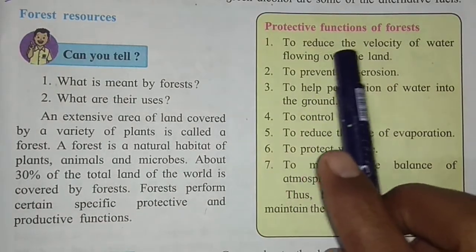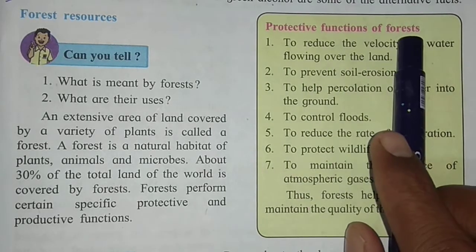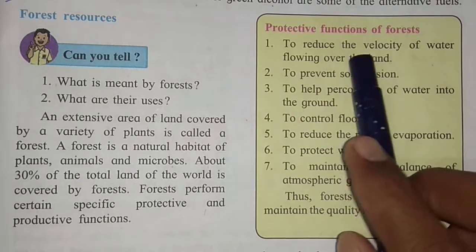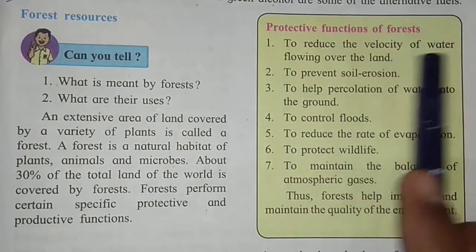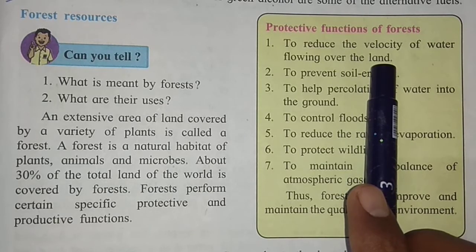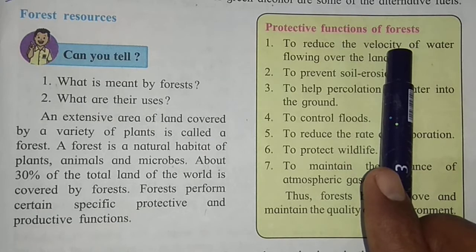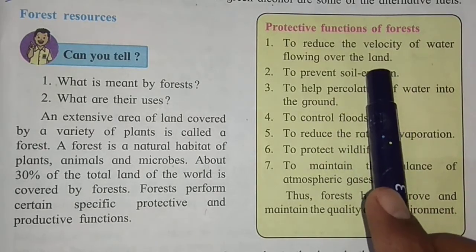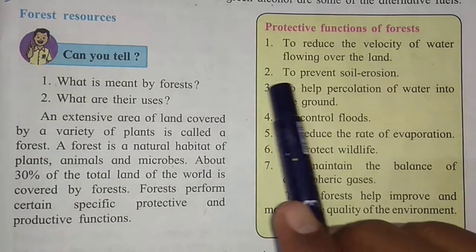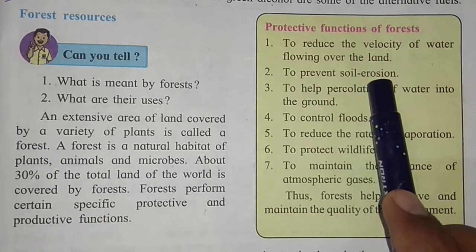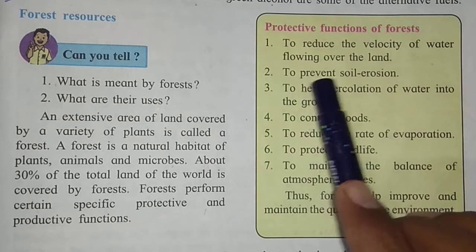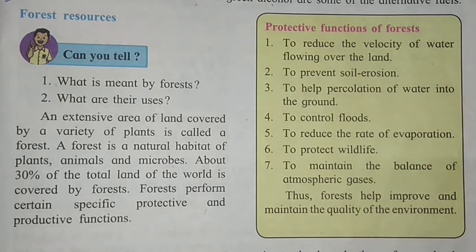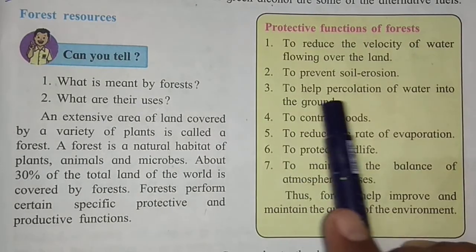Here, to the right side in the yellow color box, some protective functions are given. One of the protective functions is related to the speed of water — forests help in the percolation of water into the ground, helping rainwater seep into the earth below.